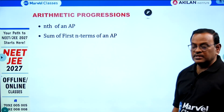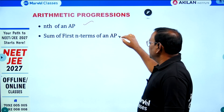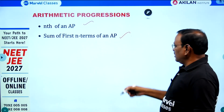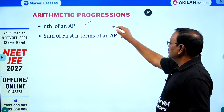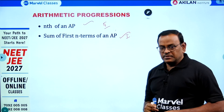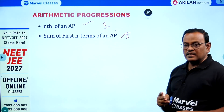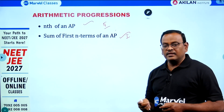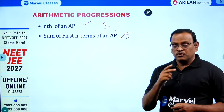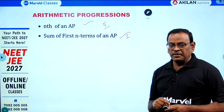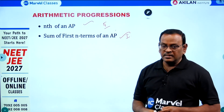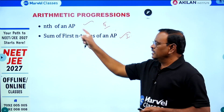Two concepts in Arithmetic Progression: the nth term of an AP and the sum of the first n terms of an AP. Both have equal weightage but nth term has more concepts. If two unknown terms are given with two conditions, find the values of A and D and then answer the required question. Problems based on three numbers in AP and four terms in AP — these types of questions you can expect, along with simple word problems on nth term.